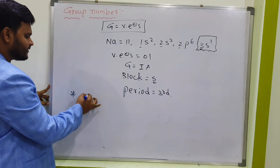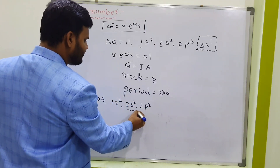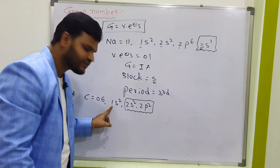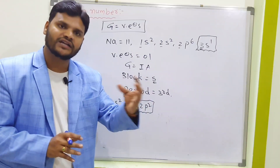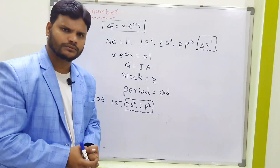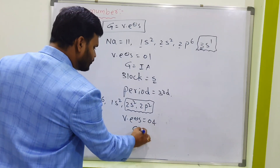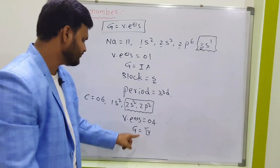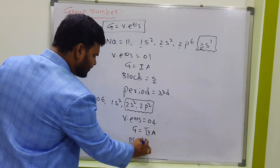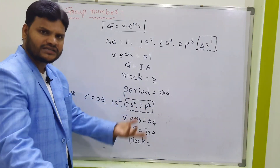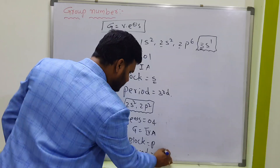For better understanding, let's take carbon as another example. Carbon's atomic number is 6, and its electronic configuration is 1s², 2s², 2p². The second energy level is the outermost, containing 2+2 = 4 valency electrons. So carbon's group number is 4. Since the last electrons are in P orbital (2p²), carbon is a P block element. The last energy level is 2, so carbon belongs to the second period.